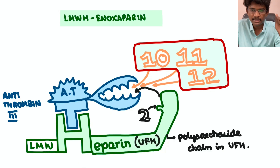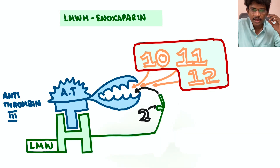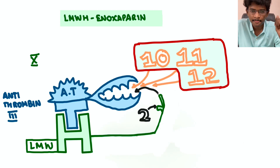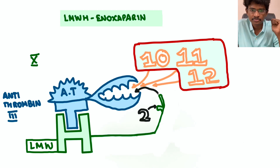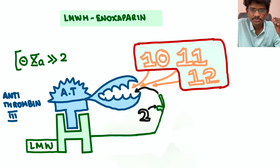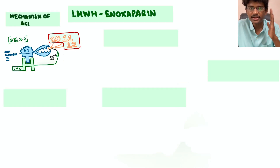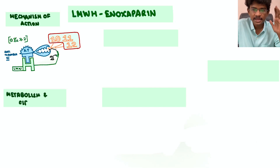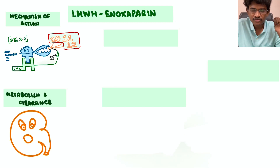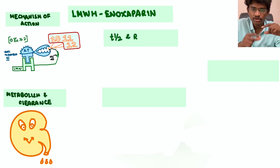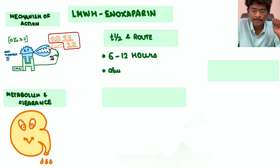Low molecular weight heparin (LMWH), such as enoxaparin, has its molecular weight reduced by cutting the long polysaccharide arm. It can easily inhibit factors 10, 11, and 12, but its efficacy against factor 2 (thrombin) is much less. LMWH is cleared by the kidney, and its half-life is 6 to 12 hours, providing a longer range of activity.